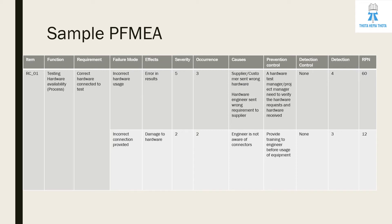For the second failure mode — incorrect connection provided — the effect is that it may completely damage the hardware. Severity is 2, occurrence is 2, because most of the time it won't damage. Cause is that the engineer is not aware of the connectors or connection provision. Prevention control is to train the engineer before use of that equipment. Detection control is none, detection rating is 3, and RPN is 12 (2 × 2 × 3).